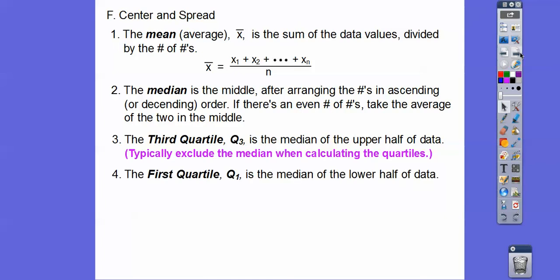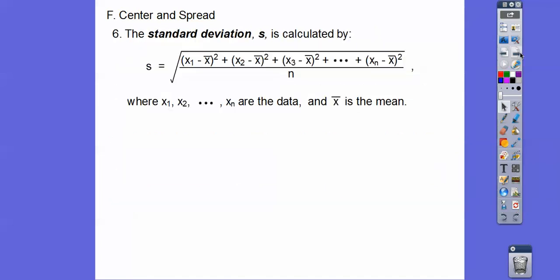So, and then the first quartile is the median of the lower half of data. And then this thing that's called the interquartile range, which is called the IQR, is just Q3 minus Q1. And so it just talks about the center and the spread. So we'll do box plots in the next lesson, and so we'll need this stuff later.